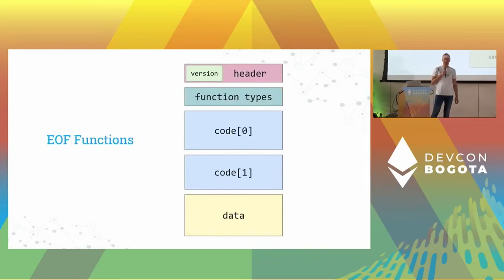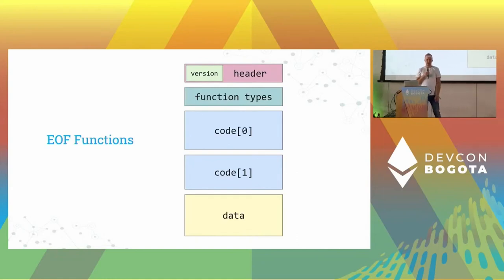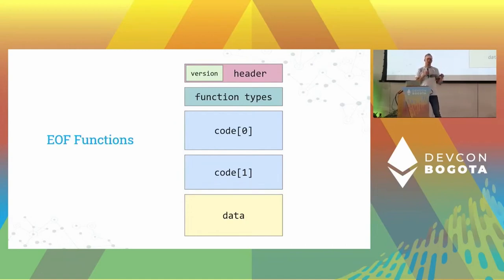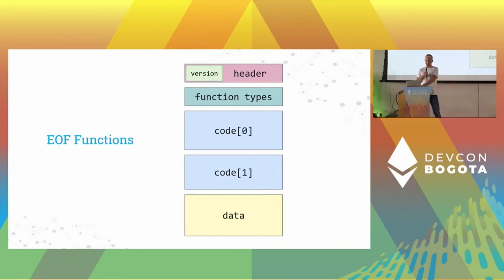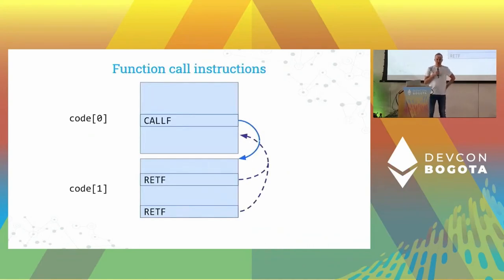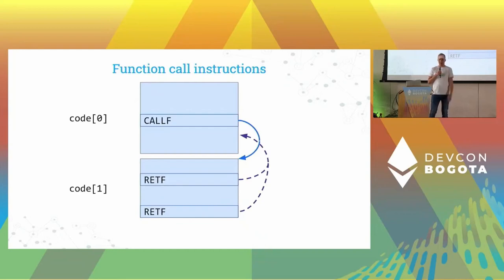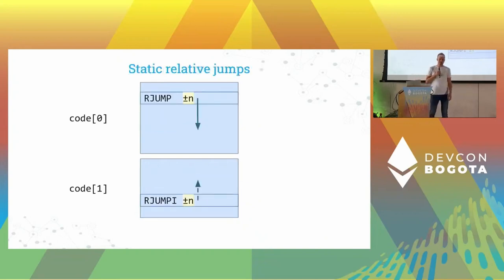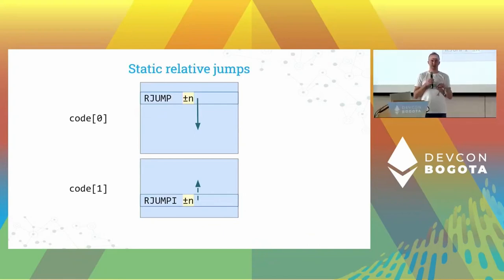We can also do a bit more than that. The next proposal that can be applied on top of EOF is to introduce functions — partitioning the code section into more pieces with additional function type information. To work with functions in the EVM, we introduce two new instructions: one to call another code blob, and one to return from the call to the caller.